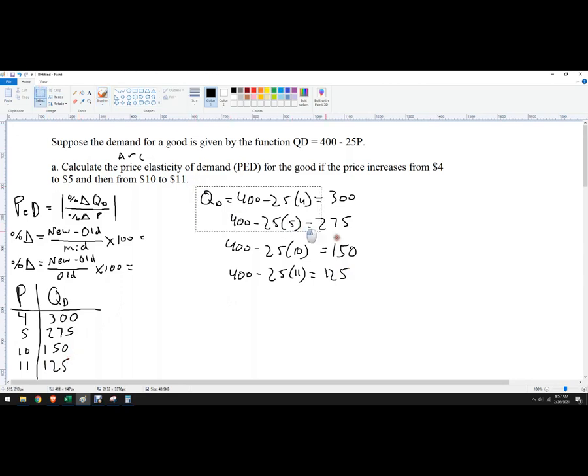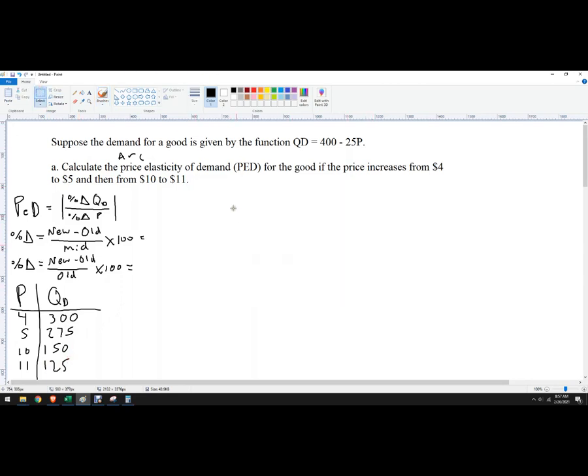Now I've got all of my quantities there, and I can go to town trying to calculate the two separate elasticities. So these are actually two separate problems. So increasing from 4 to 5, what is our percent change in quantity demanded?